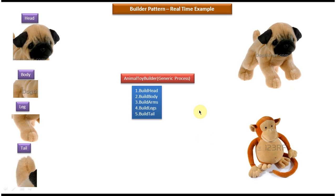The generic process for creating animal toys: Step 1 - build head, Step 2 - build body, Step 3 - build arms, Step 4 - build legs, Step 5 - build tail. Using this generic process, I can create a dog toy, monkey toy, elephant toy, etc. The process is the same; we can create any kind of toy.